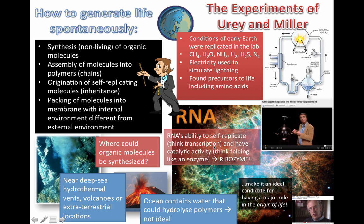Also, RNA — the way it folds, especially a tRNA molecule — has a very specific shape. Although tRNA is single-stranded, it is able to fold and form temporary double-stranded regions. So not only can it store information in the form of genetic inheritance, it can also have a specific three-dimensional structure, which reminds us of enzymes and their active sites. Think of the word ribozyme: a chain of ribonucleic acids combined with the properties of an enzyme. RNA might have been one of those first molecules, making it an ideal candidate for a major role in the origin of life.